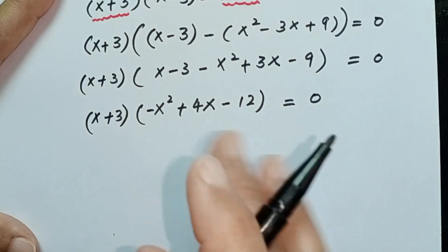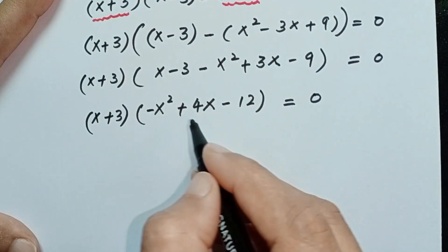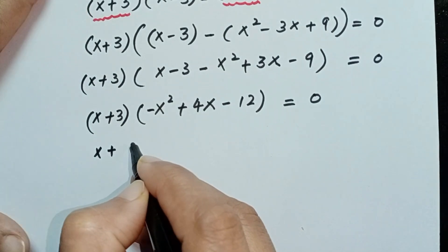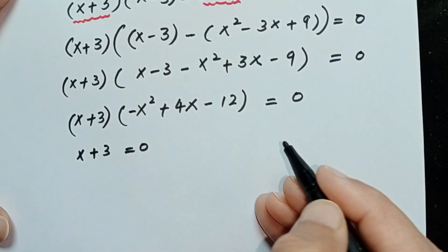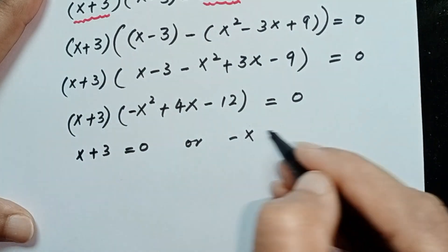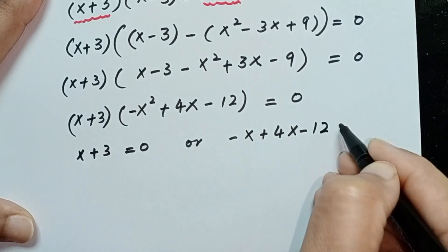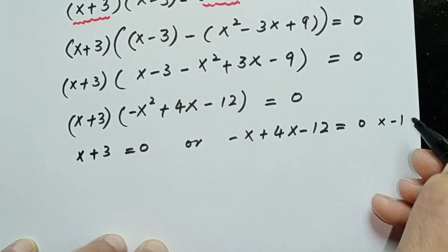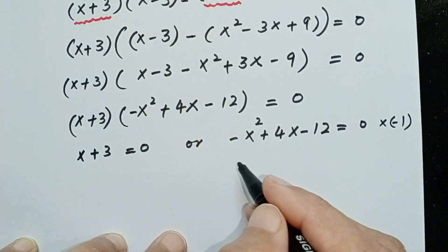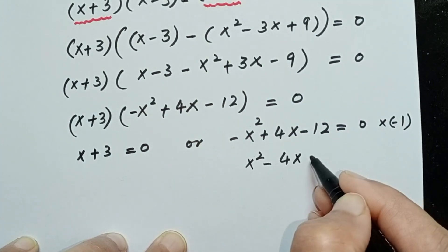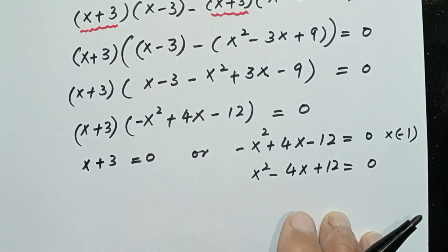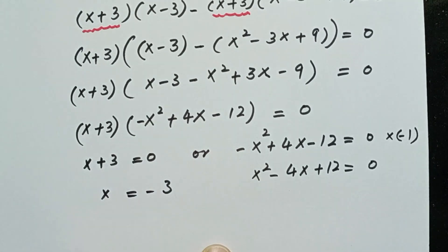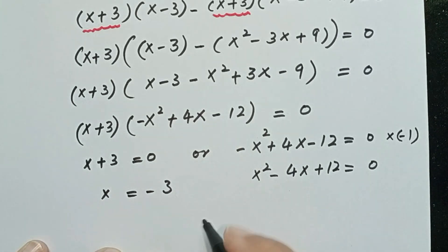From this, either x + 3 = 0 or −x squared + 4x − 12 = 0. From x + 3 = 0, we get x = −3, which is the real solution. For the other expression, we multiply by minus 1 to get x squared − 4x + 12 = 0.